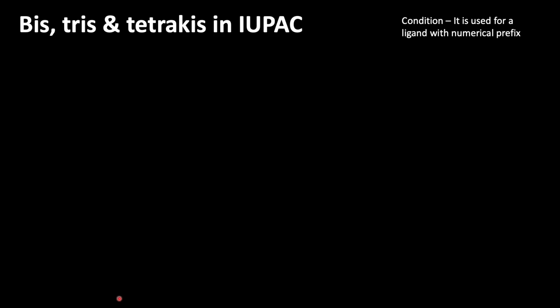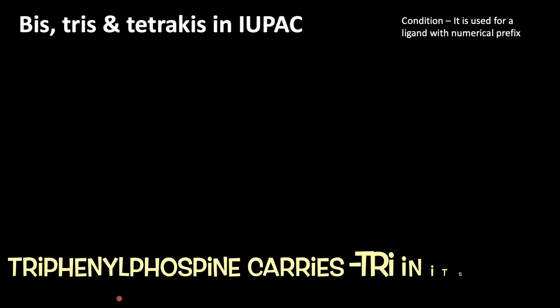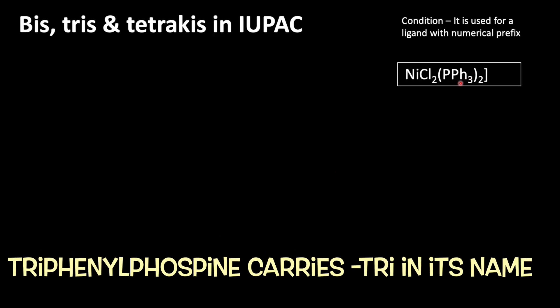Let us see with an example: NiCl₂(PPh₃)₂. PPh₃ is triphenylphosphine. This complex contains two ligands — one is Cl₂, and the other is the triphenylphosphine ligand.